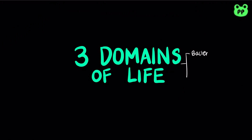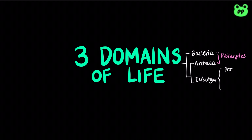The tree of life consists of three domains: bacteria, archaea, and eukarya. Eukaryotes are more related to archaea than bacteria. Eukaryotes are further classified into protists, fungi, plants, and animals, each of which will be talked about in future videos. This video will focus on comparing the three domains of life.